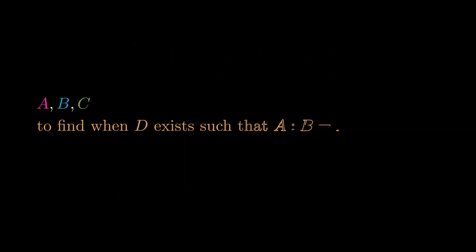Given three numbers, can we find the number D such that A:B:C:D exists?